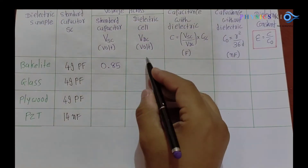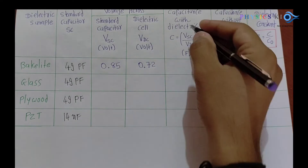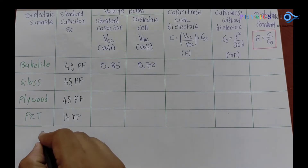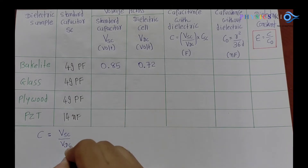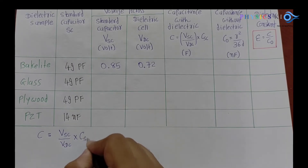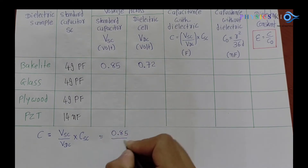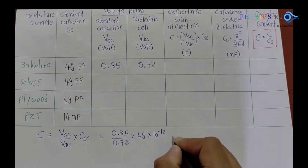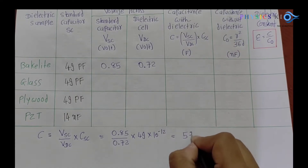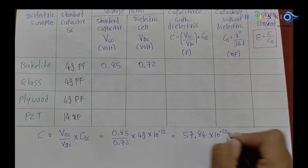The formula for capacitance with the dielectric is: C = (V_HC / V_DC) × C_standard, where the standard capacitor value is 49 picofarads. Substituting V_HC = 0.85 and V_DC = 0.72 into the formula and calculating gives C = 57.84 × 10⁻¹² farads. This is the capacitance with the bakelite dielectric material.